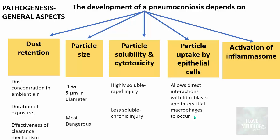The fifth factor is activation of the inflammasome. This activation occurs after dust particles are phagocytosed and amplifies both the intensity and duration of the local reaction. Remember these five important factors: dust retention, particle size, solubility and cytotoxicity, uptake by epithelial cells, and activation of the inflammasome. Smoking is common to all pneumoconiosis, as it hampers mucociliary clearance, making individuals more prone to occupational dust lung diseases.